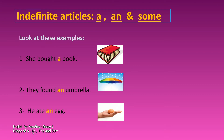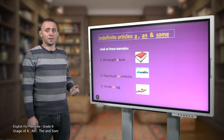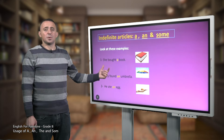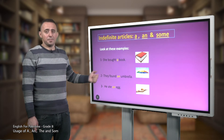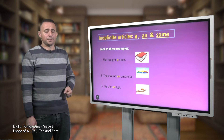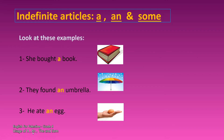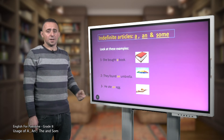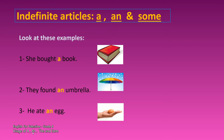Number two: they found an umbrella. Notice we have the indefinite article 'an', followed by 'umbrella'. The word 'umbrella' starts with a vowel sound — that's why we use 'an umbrella'. We don't say 'a umbrella'. Number three: he ate an egg. The word 'egg' also starts with a vowel sound, so we use 'an egg'. We don't say 'a egg'.